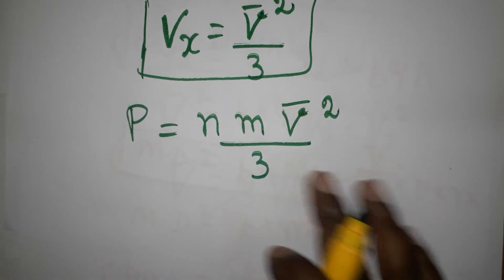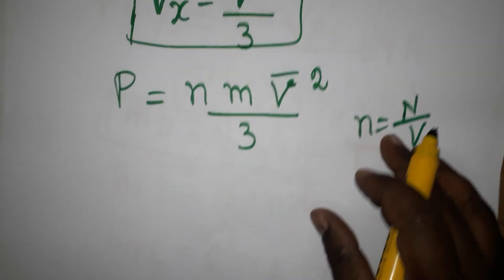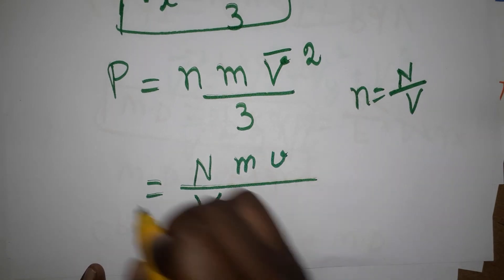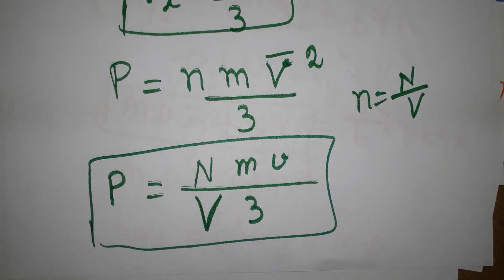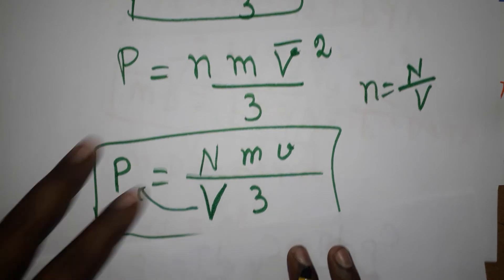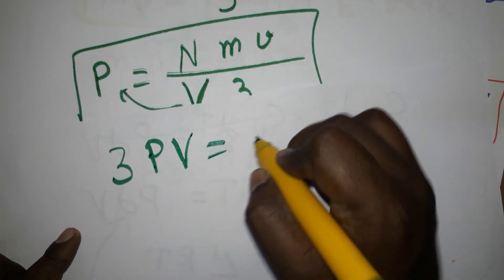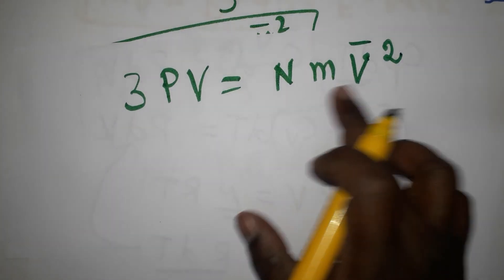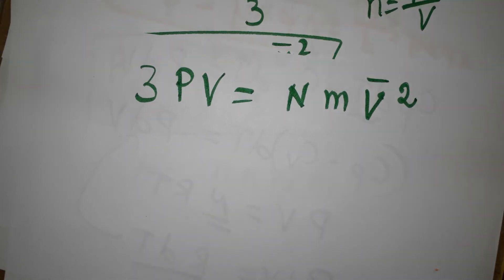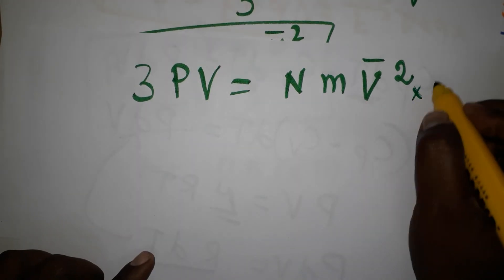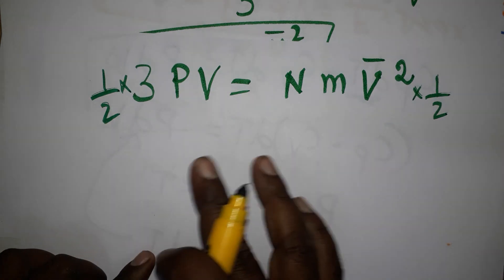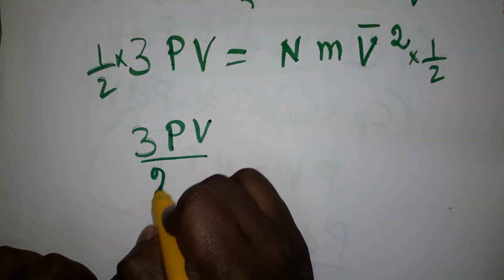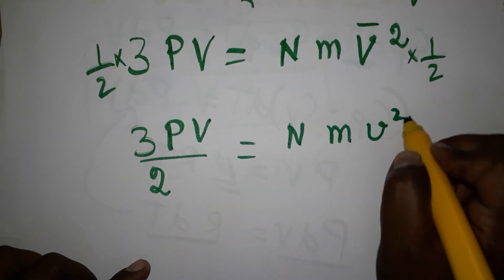Small n equals capital N divided by V (number of particles per unit volume), with capital V as volume. Substituting into the pressure equation: P = (N/V) × m × v²/3. Rearranging by multiplying both sides by V: PV = (1/3) × N × m × v², or equivalently 3PV = N × m × v²_avg. To get kinetic energy we need the ½mv² form, so multiplying both sides by ½: 3PV/2 = N × mv²/2.